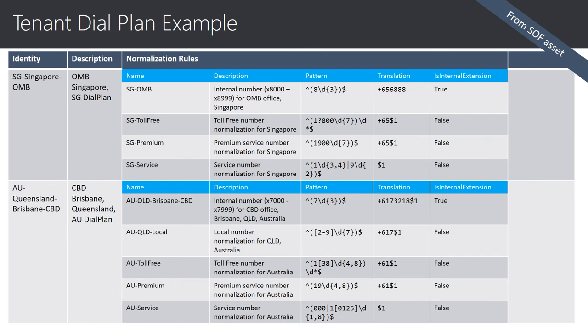Here is the example of tenant dial plan configurations that you can deploy in your tenant. Note the example of naming convention which comprises of country code, when applicable the state, then the city, and then the office code. You would typically use this format when there is short-digit dialing within an office. For the Australian example, there are local normalization rules to cater for 8-digit local dialing that would be familiar with most end users. Notice also the omission of international dialing normalization rules — it is intentional since it is already covered by the service dial plan that will be merged automatically with the tenant dial plan. These two dial plan examples are provided as a starting point based on the organization's requirements.